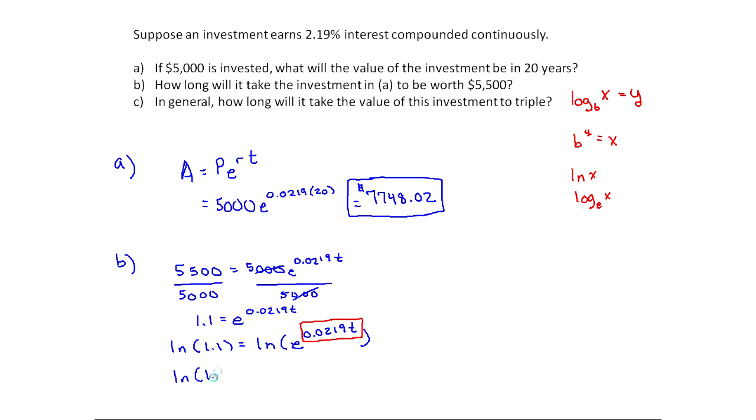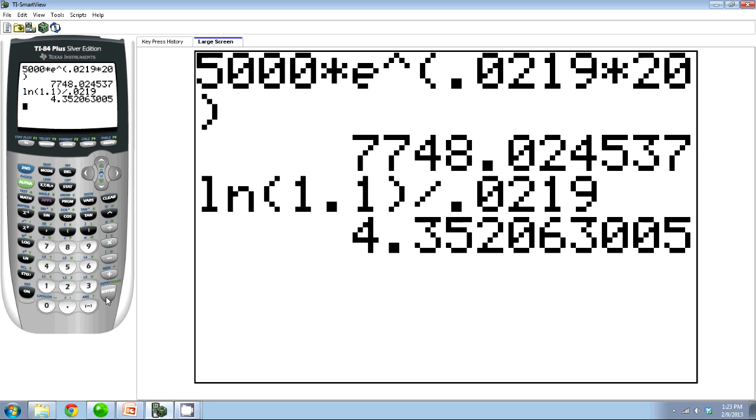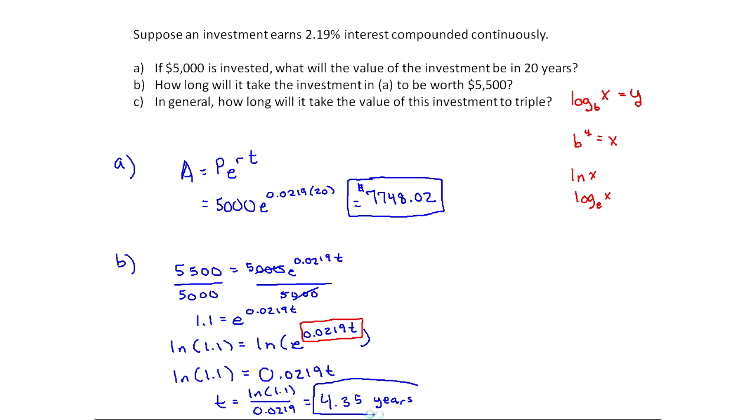So I end up with LN of 1.1 equals 0.0219T. Now, here's where you don't want to calculate this just yet. You'll introduce rounding error. We're just going to solve for T. That'd be LN of 1.1 over 0.0219, and now you can calculate that. Your LN button is on the left-hand column of your graphing calculator, right under log. So I just do LN, natural log, 1.1 divided by 0.0219, and I get 4.35 approximately. And this would be in years. I'm okay with you leaving it this way. Just do not write four years, three months, because that isn't actually quite right. This is 0.35 of a year. To figure out how many months, you'd have to do 0.35 times 12.